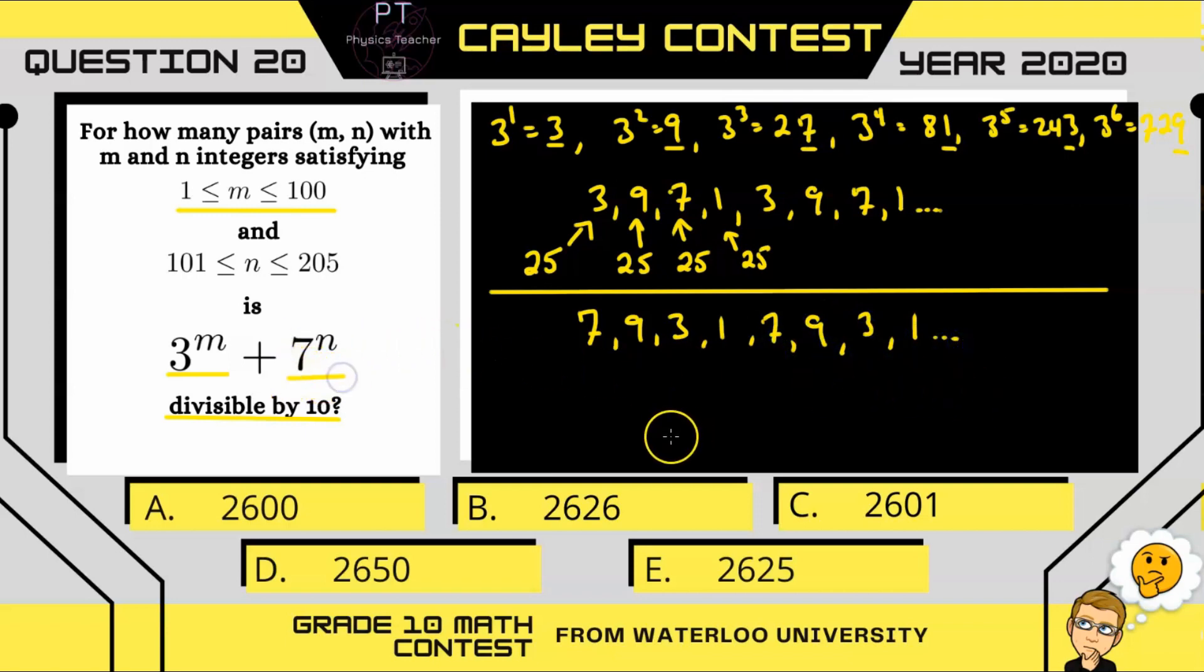doing 7 to the power of n. Now n is between 101 and 205. So at 101, you're going to have the ones digit of 7. And that will give you 26 values with a ones digit of 7, 9, 3, and 1, all the way up to 204.